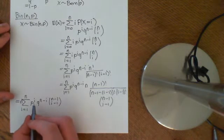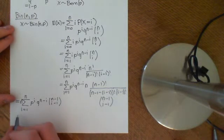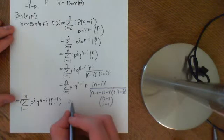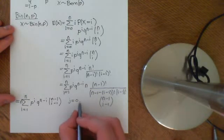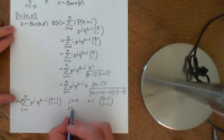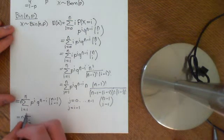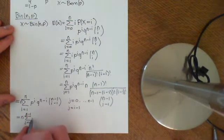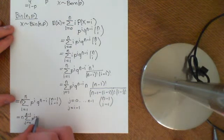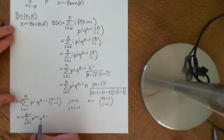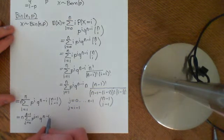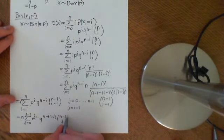The way we need to do that is we need to use a different variable. We need to sum from j is equal to 0 to n minus 1, and we'll define j to be equal to i minus 1. So if we rewrite this sum, it's the sum from j is equal to 0 to n minus 1, and then we'll replace i with j plus 1, and we replace i here again with j plus 1, and then we get n minus 1 choose j.